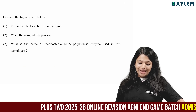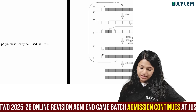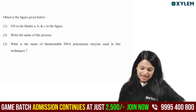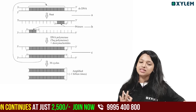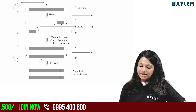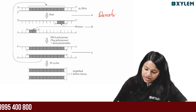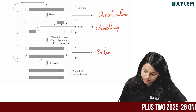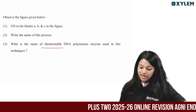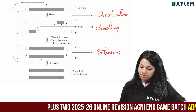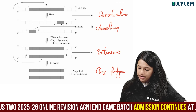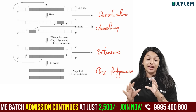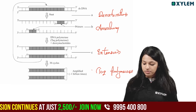Observe the figure given below — fill in the blanks A, B, and C. Write the name of this process, and name the thermostable DNA polymerase enzyme used in this technique. The process is PCR. Steps A, B, C are denaturation, annealing, and extension. The thermostable DNA polymerase enzyme used is Taq polymerase — the enzyme is stable at high temperatures.